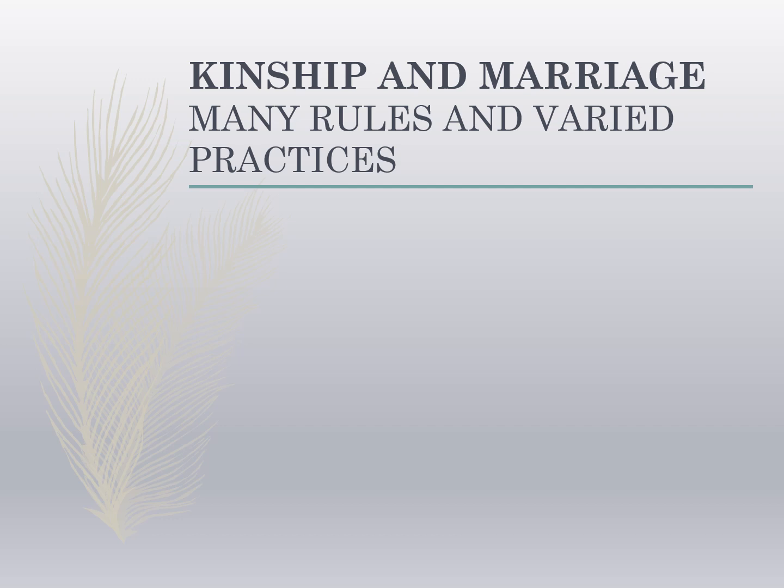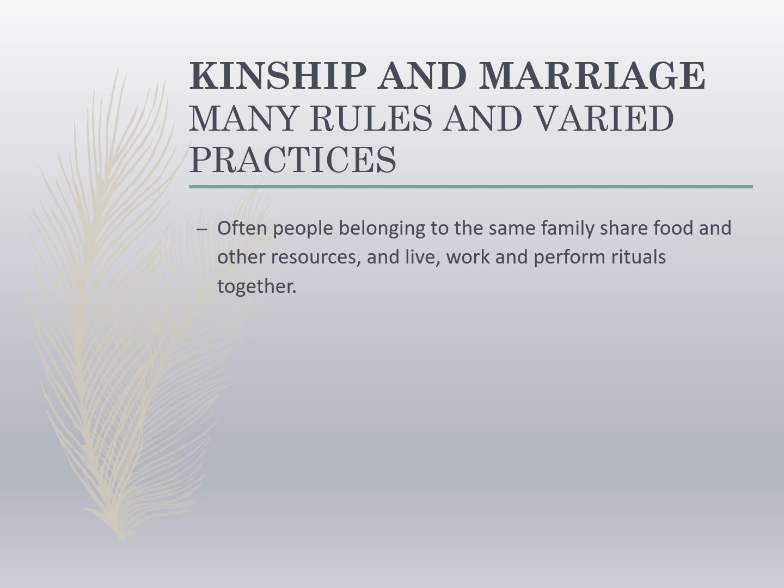Now we will start the main topic of the chapter: kinship and marriage. We often take family life for granted. However, we may have noticed that not all families are identical — they vary in terms of the number of members, their relationships with one another, and the kinds of activities they share. People belonging to the same family often share food and other resources, and live, work, and perform rituals together. Families are usually parts of larger networks of people defined as relatives.